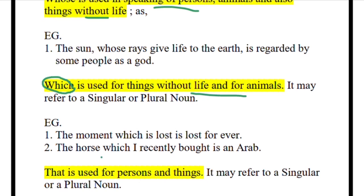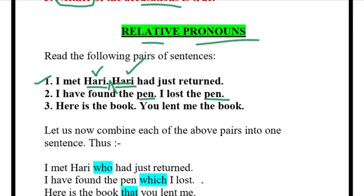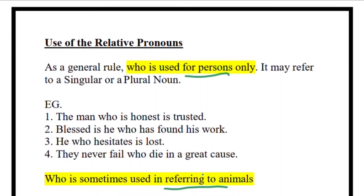How do you understand where to use 'which' and where to use 'that'? That depends on how the sentence appears and how it sounds. For example: 'I have found the pen which I had lost' — it sounds nice using 'which.' But in the third case: 'Here is the book you lent me' — in the place of 'book,' let us use 'that': 'Here is the book that you lent me.' So: 'I met Harry who had just returned'; 'I found the pen which I lost'; 'Here is the book that you lent me.'